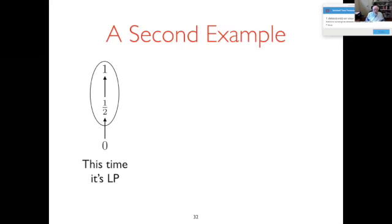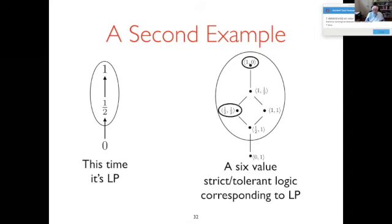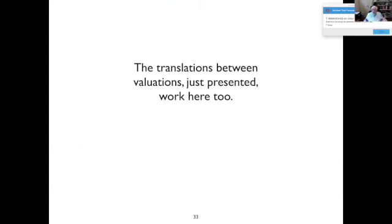Here's a second example. Graham Priest's logic of paradox has the same lattice structure but differs in the set of designated truth values. Here's the six-valued counterpart again. You notice the lattice structure is the same — the lattice structure only depends on the lattice structure of the original many-valued logic. What's different is the designated values: the tolerantly designated ones are in the big circle, and the strict ones are the two things in the small circles. Again, these validate the same sequences, and exactly the same translations establish that here.